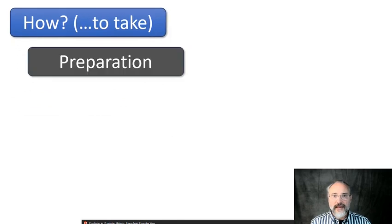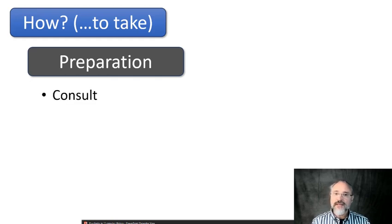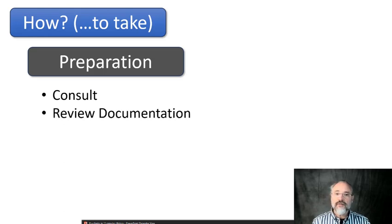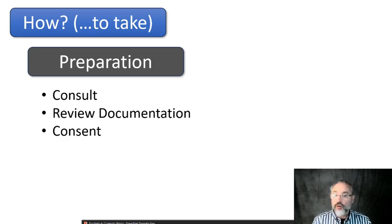The first thing we need to know is that we need to prepare ourselves before taking a psychiatric history. Psychiatric histories usually take a while; they're emotional experiences for the patients and for the psychiatrist. So it's worth spending some time preparing. We need to consult with other professionals who might have seen the patient before, review the documentation, and know, for instance, if the patient has presented their history four times in the last three hours. Because of that, we need to get consent — we need to make sure patients don't just repeat their story over and over to people they don't know.